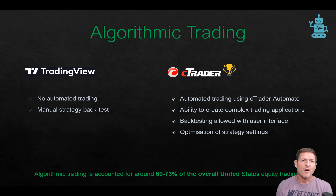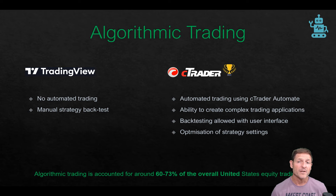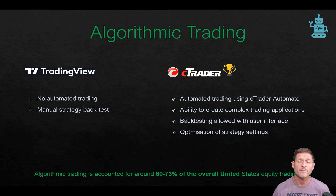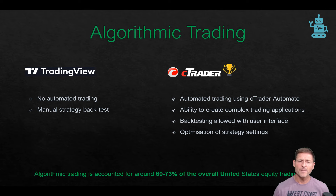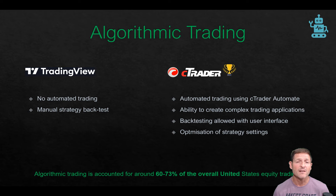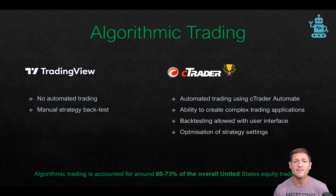Algorithmic trading — also known as automated trading or mechanical trading — is where you code a set of instructions that execute automatically. For example, you might open a position when the RSI is above or below a certain value, or when something happens in the markets. Algorithmic trading systems can be complex or basic. The idea is you don't have to sit staring at your charts 24 hours a day waiting for a signal — you can automate that signal to send a message to Telegram, SMS, or actually execute a market order for you automatically. TradingView does not have any automated trading built into the platform, but they do have a manual strategy backtest.